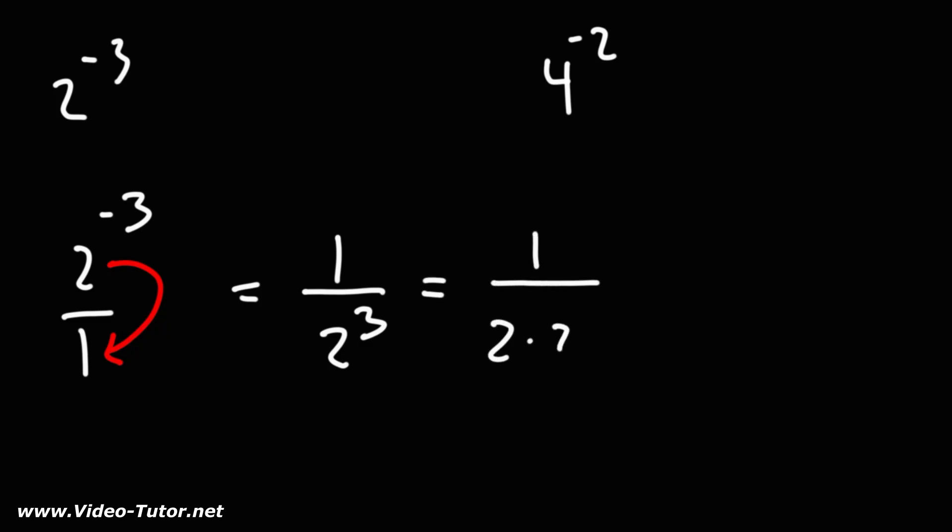2 to the third is 2 times 2 times 2. We're multiplying three 2s and that's equal to 8. So 2 to the negative 3 is 1 over 8.